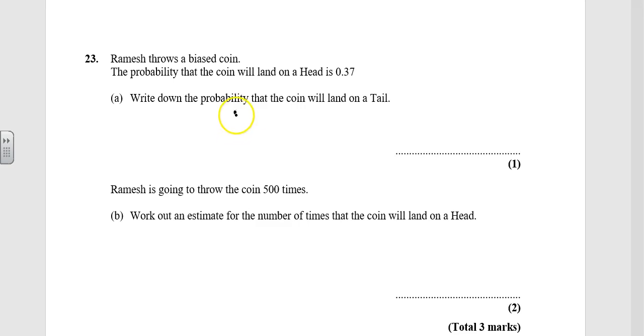Well, they both need to add up to 1, so if we do 1 minus 0.37, that gives us 0.63. So the probability it lands on a tail is that.